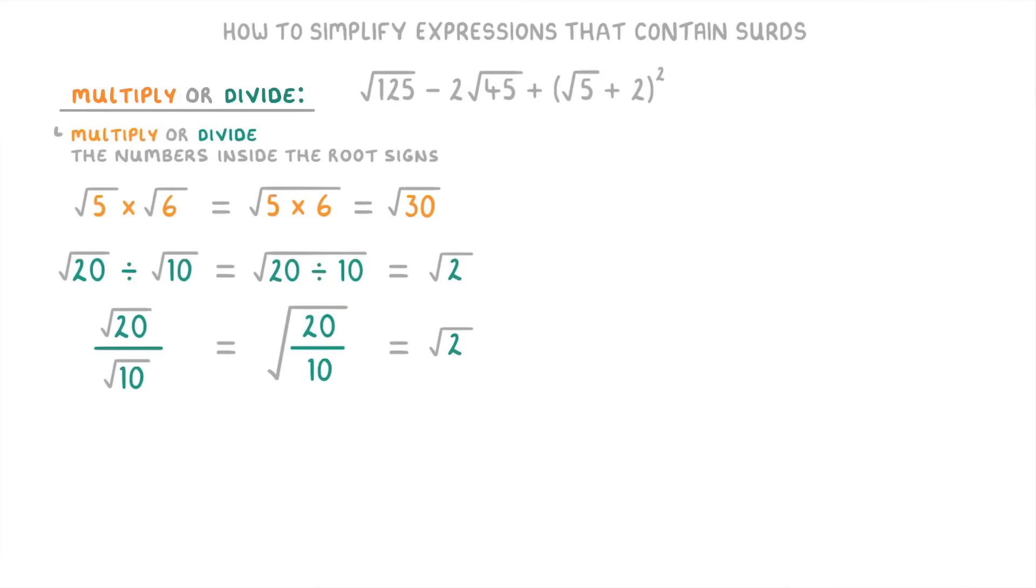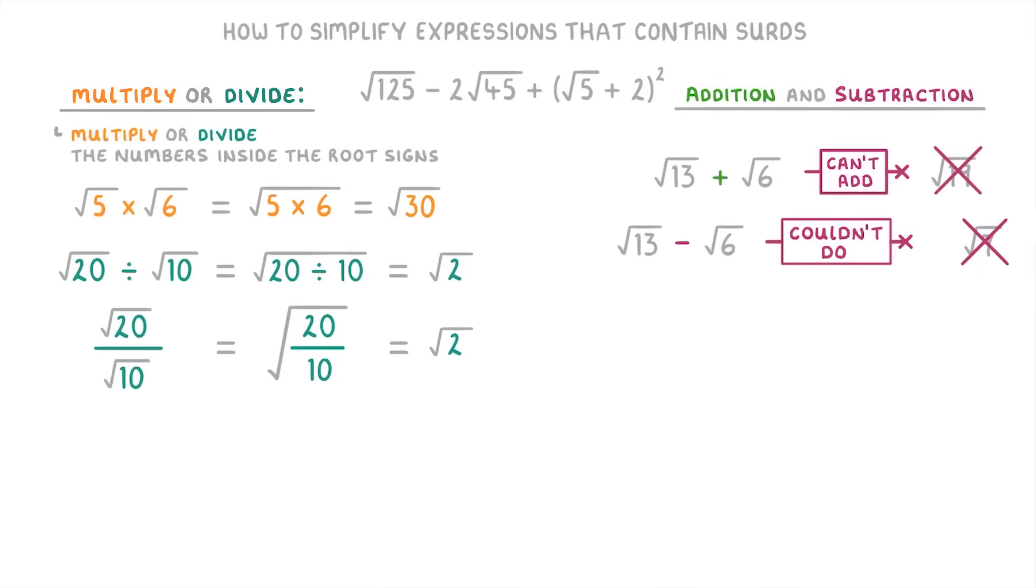The important thing to remember though is that addition and subtraction don't work this way. For example, if you have √13 plus √6, you can't add them together to get √19, just like you couldn't do √13 minus √6 to get √7.